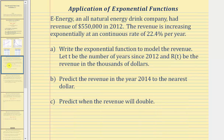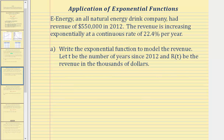Let's look at an application problem. eEnergy, an all natural energy drink company, had revenue of $550,000 in 2012. The revenue is increasing exponentially at a continuous rate of 22.4% per year. We'll write the exponential function to model the revenue, where t is the number of years since 2012 and r of t is the revenue in thousands of dollars. Because we have a continuous growth rate, we can model revenue using base e: r of t equals a times e raised to the power of kt.